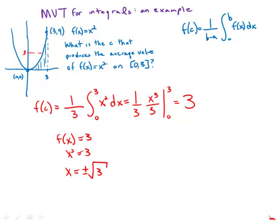Well only one of these is actually in the interval of concern and that would be positive square root of 3. So c equals the positive square root of 3.